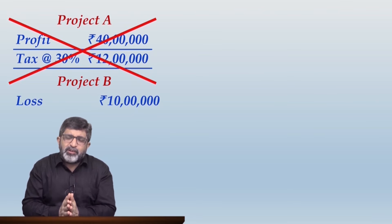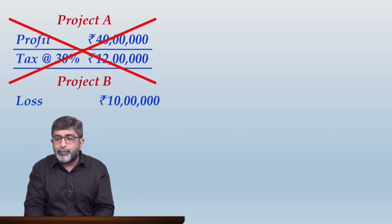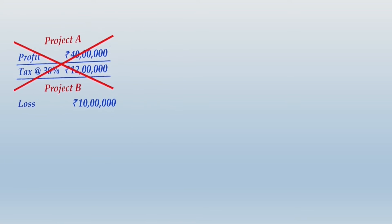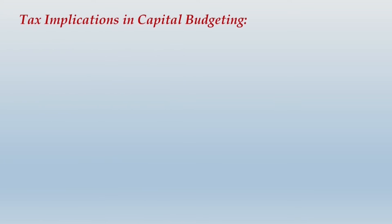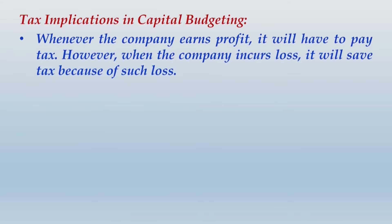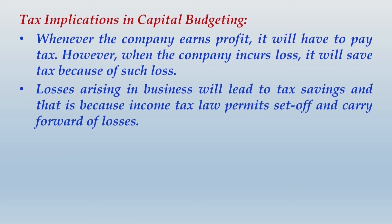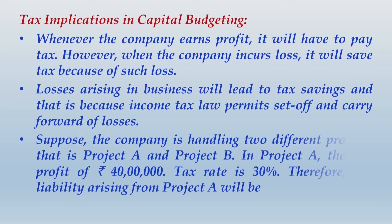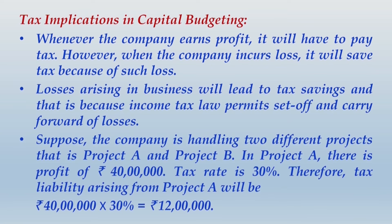Tax savings will be indicated when the loss is being carried forward and set off at later years against some taxable profits. When we deal with bigger examples we will get much more clarity about this. Now please write under the head 'Tax Implications in Capital Budgeting': whenever the company earns profit it will have to pay tax; however, when the company incurs a loss it will save tax because of such loss. Losses arising in business will lead to tax savings, and that is because income tax law permits set-off and carry forward of losses.